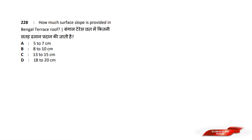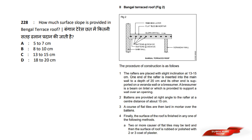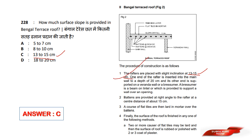How much surface slope is provided in the Bengal Terrace? Options are: A) 5–7 cm, B) 8–10 cm, C) 13–15 cm, D) 18–20 cm. Answer option C — 13 to 15 cm. Rafters are placed at a site inclination of 13 to 15 cm. Answer: 13 to 15 cm.